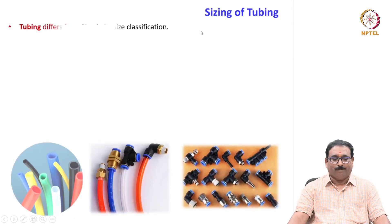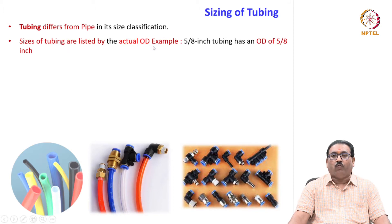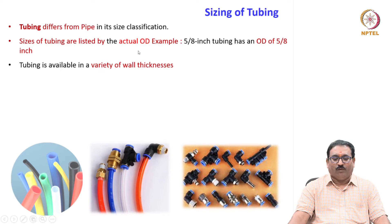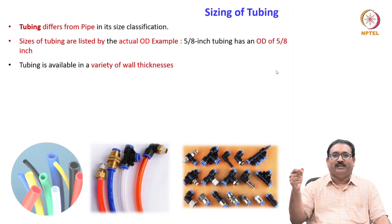Sizing of tubes differs from pipe size classification. Tubes are listed by their actual outside diameter (OD). For example, 5/8-inch tubing has an OD of 5/8 inch. Tubing is available in a variety of wall thicknesses; for example, 5/8-inch OD has various thicknesses under that category, as shown in the next slide.